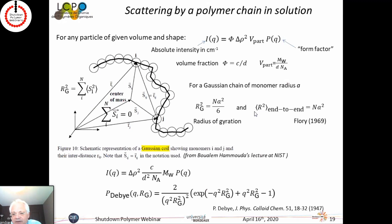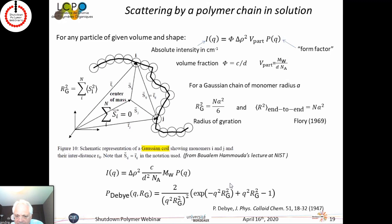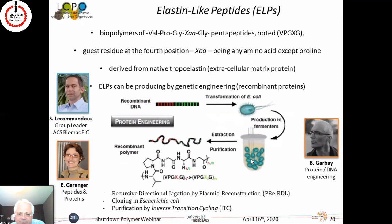For polymer chains, the simplest model is the Gaussian chain — a random walk as described by Flory — characterized by a radius of gyration Rg related to the center of mass. The intensity form factor for Gaussian chains was derived by Paul Debye in 1947. At small angles, one can also apply the Guinier approximation to extract Rg. The form factor can be found in textbooks or fit using software like SasView.